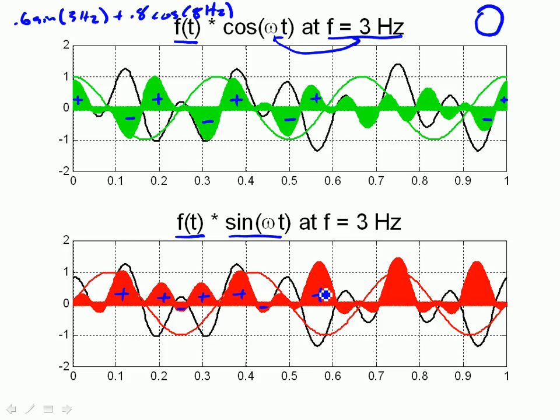And while the integral here is equal to 0, the integral down here gives me a number that's greater than 0. In fact, there is some sine component to this function. That's what the Fourier transform is telling me.